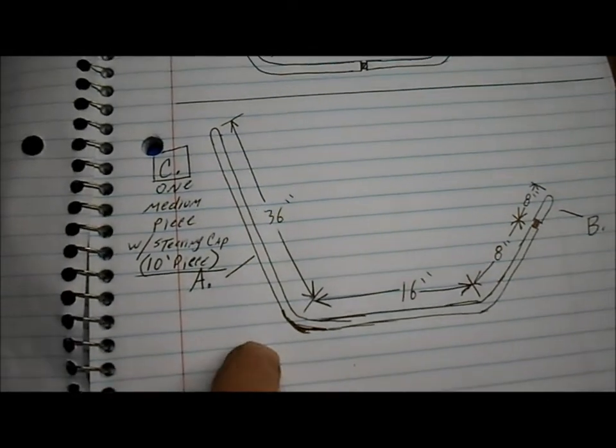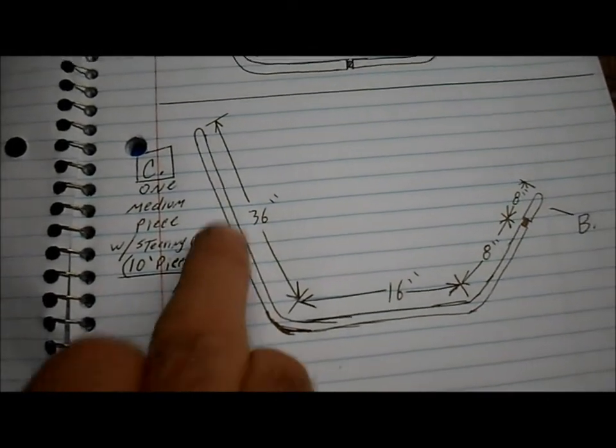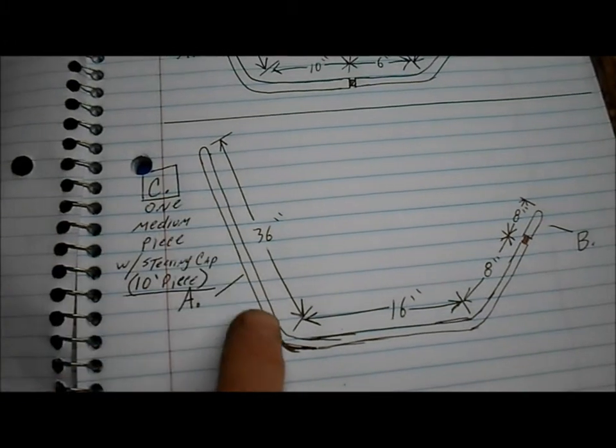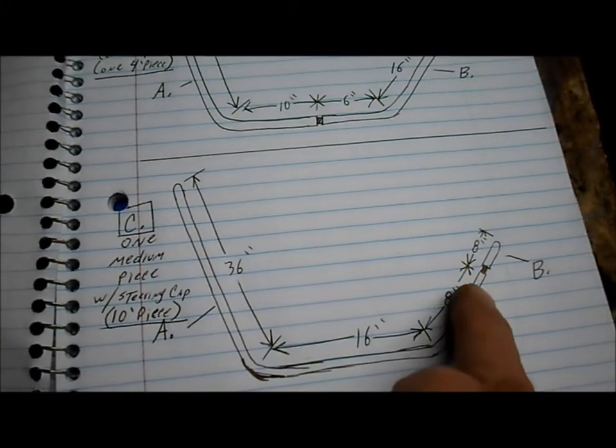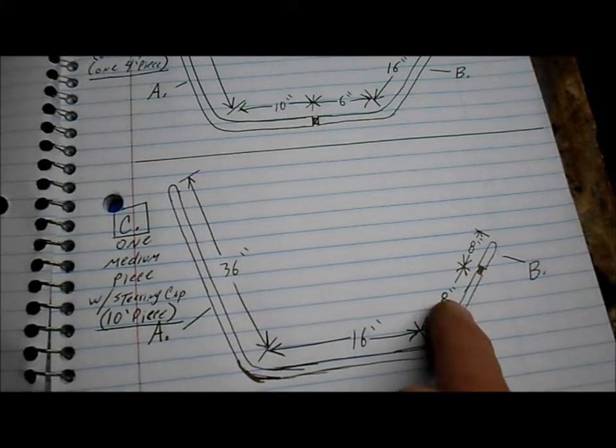Or another way we could do it would be one 10 foot piece would pretty much be the roll bar seat back, the whole floor, and come up about half to three fourths of the way for the steering support.